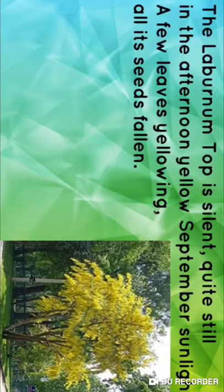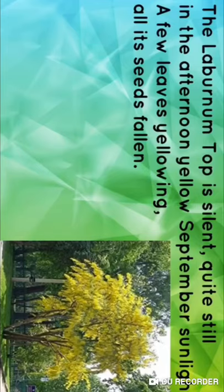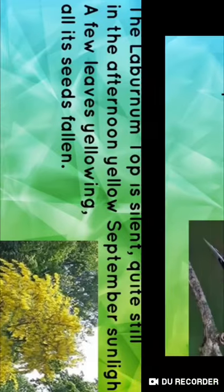A few leaves yellowing, all its seeds fallen. Some leaves have been yellowed and some seeds have fallen. In these four lines, the yellow word, which is used in the autumn season, tells us September comes in the autumn season. The Laburnum Top — the peed — is quite quiet and still. There is a reason for this which we will explain in the next lines.